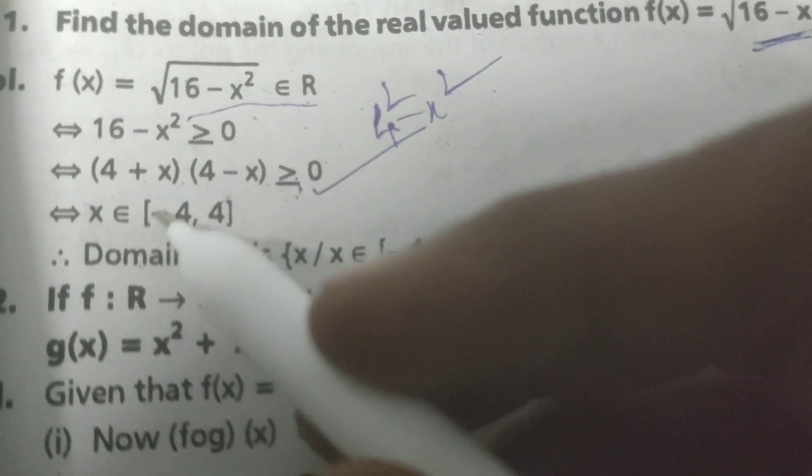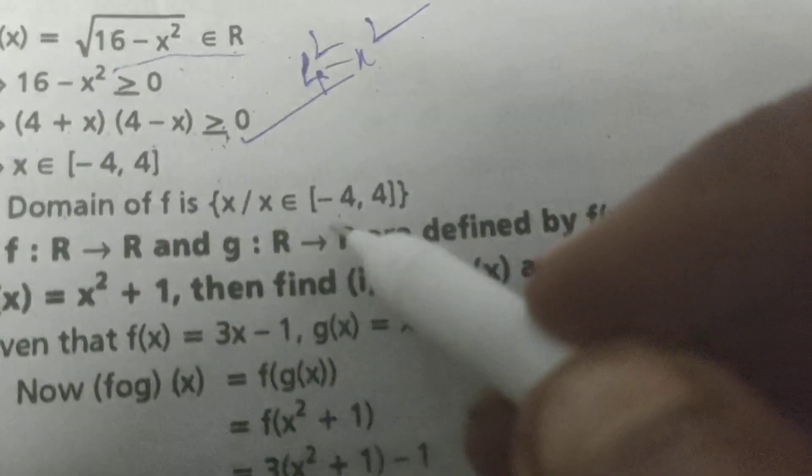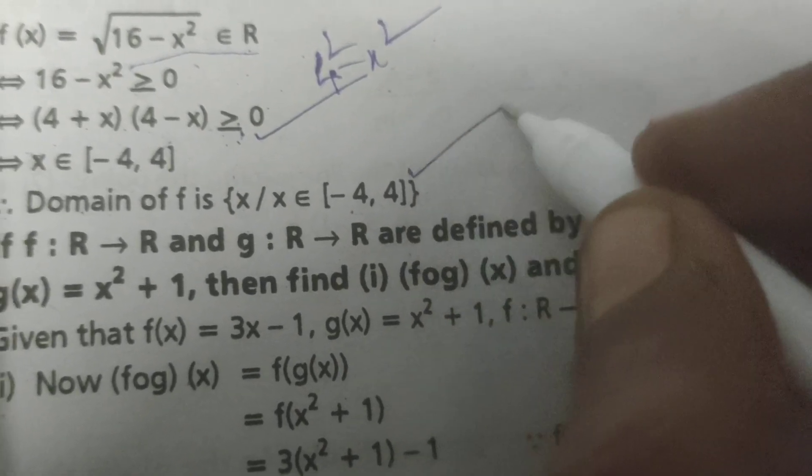Here write x belongs to the interval minus 4 to 4. Therefore, the domain of f is x such that x belongs to the interval [-4, 4].